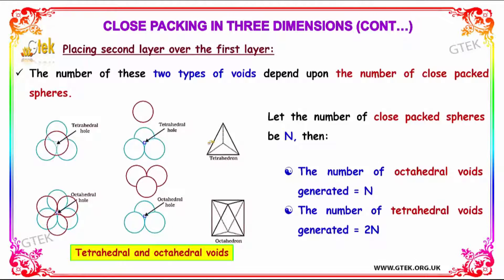The number of these types of voids depends on the number of close-packed spheres. If the number of close-packed spheres is N, then the number of octahedral voids generated is N and the number of tetrahedral voids generated is 2N.